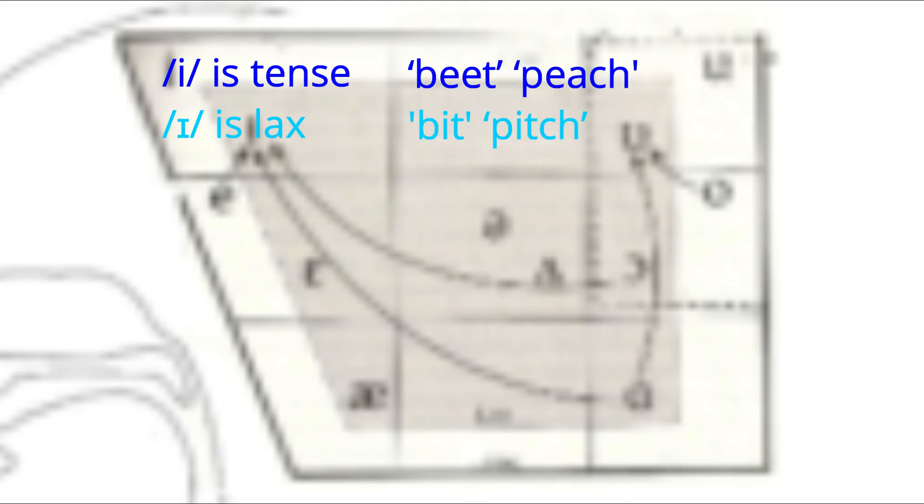Linguists distinguish E and E by the tenseness. To say E, we need to make the muscles in the vocal tract work hard. The lips are pulled back and the tongue is tense. But when we say E, the vocal tract is relaxed. So, for example, beat and bit, peach and patch, are contrasted by the vowel sounds being tense in the first words but lax in the second words.